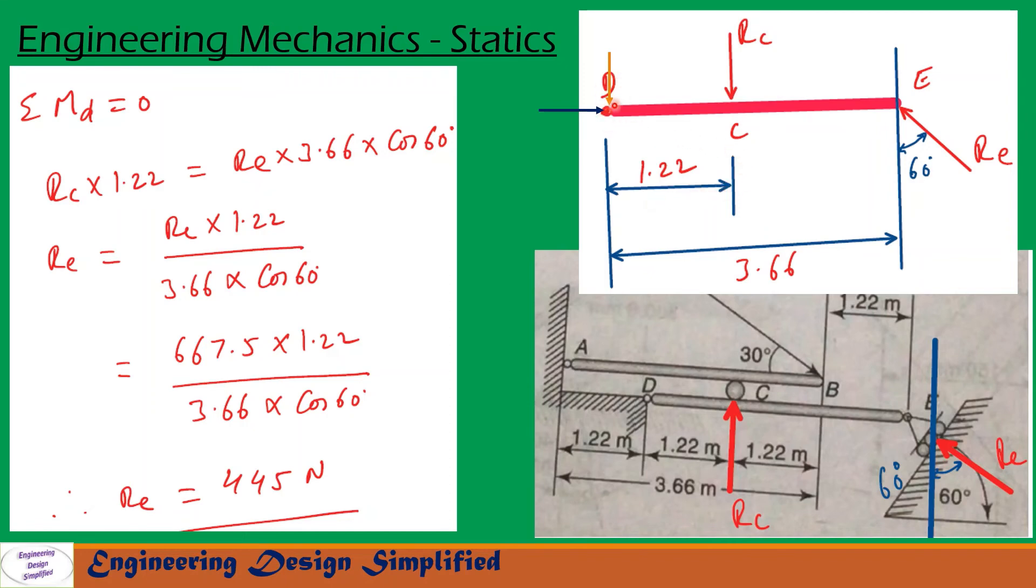Now let us take moments about D. So moments about D will be sigma MD equal to 0. So moment due to RC about D will be RC into this distance 1.22. That is written here, RC into 1.22. And moment due to RE will be the vertical component of RE, that is RE cos 60 into the distance 3.66. That is written here, RE into 3.66 into cos 60. So after substituting the values and simplification, we get RE equal to 445 Newtons. That is the reaction at E is 445 Newtons, and direction is 60 degrees with the vertical.